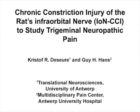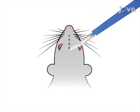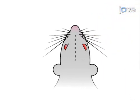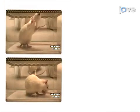The overall goal of this procedure is to study trigeminal neuropathic pain in rats via a chronic constriction injury to the infraorbital nerve. This is accomplished by first making a midline scalp incision and exposing the infraorbital nerve, then constricting the infraorbital nerve by placing two loosely tied ligatures around the nerve.